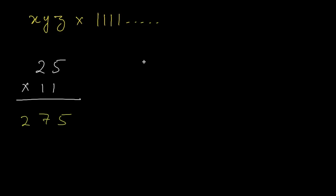Let's take another example. Let's say 81 into 11. Again, the first and the last digit of the answer would be the same as the multiplicand. So in this case, the first digit would be 8, the last digit would be 1. And to fill up the digits in between, we'll simply add 8 and 1. So the answer would be 891.